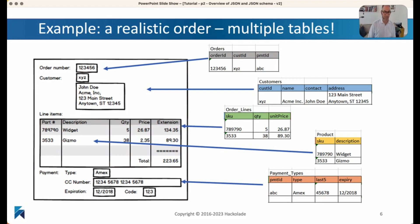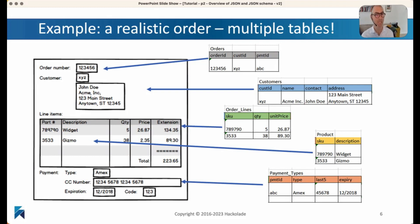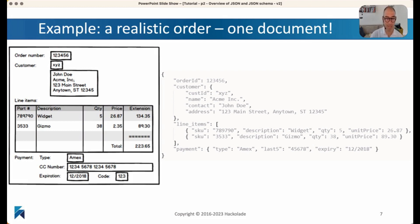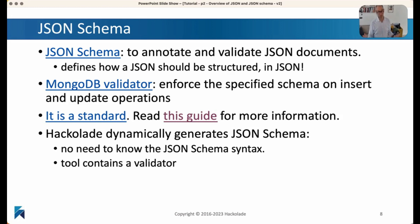To give you an example: if we think about an ordering process, on the left-hand side we see a representation of such an order with order information, customer information, product information, line items, payment information, and all of that. Historically, all these elements would be stored inside different table structures — an order table, a customer table, a product table, a payment type, an order line — requiring you to join all these tables together. In a JSON document structure, you bring everything together inside one document, with nested structures holding information about each entity: the customer, the line item, the product — all nested inside one document, so you only need to process that one document.